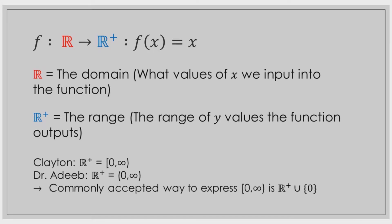I'm lazy — this won't come as a shock to many of you. So in the example, instead of R+ with the union of zero, I just put R+ equal to the bracket [0, infinity). Whenever I put R+, it includes the value of zero in the domain. Dr. Deeb does it the correct way: his R+ goes from 0 to infinity but does not include zero itself. If you really want to include zero, you use R+ union {0}. Again, this is just because I'm lazy — don't be like me, be like Dr. Deeb.